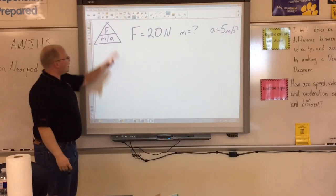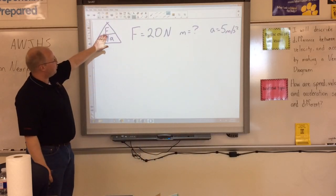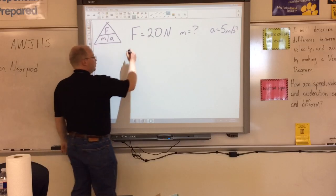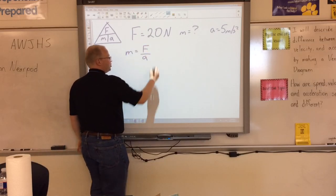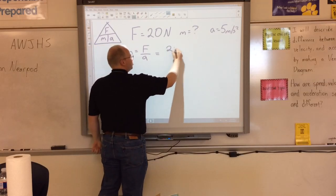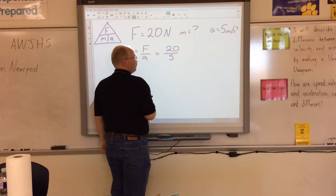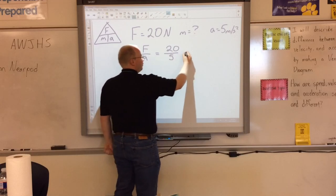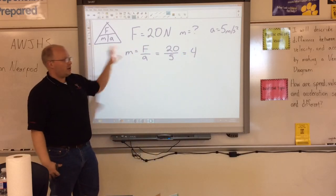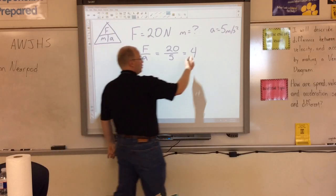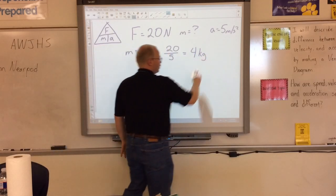We cover up the part that I need, cover up mass. I'm left with force over acceleration. So mass equals force over acceleration, which is 20 divided by 5. And 20 divided by 5 is 4. But then my unit, all my units for mass are kilograms, so it'll be 4 kilograms.